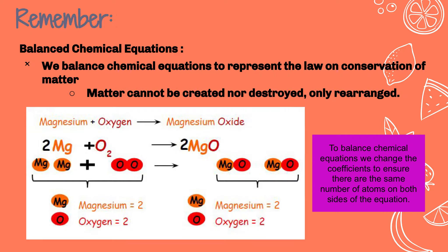If you remember that balanced chemical equations, we balance the chemical equations to represent the law of conservation of matter. So remember, matter cannot be created nor destroyed, only rearranged. So to balance the chemical equations, we can change the coefficients to ensure that there are the same number of atoms on each side of the equation.